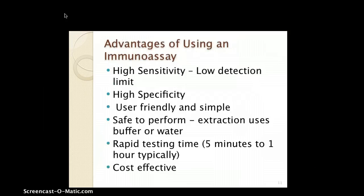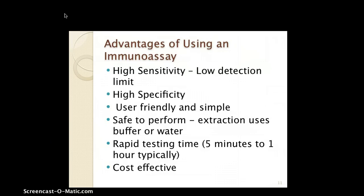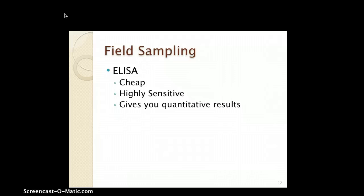The advantages of using an immunoassay — in this case ELISA — are that it is highly sensitive with a low detection limit. It's essentially a yes-or-no answer. It has high specificity — specific antibodies, specific antigens, and specific enzymatic substrates are all used. If the genetically modified protein is there, there will be a color change reaction; if not, there won't be. It is user-friendly, simple, takes very few minutes, is cost-effective, and is safe to perform.